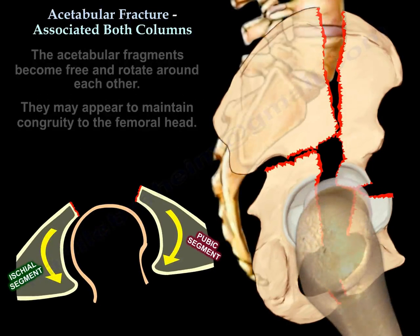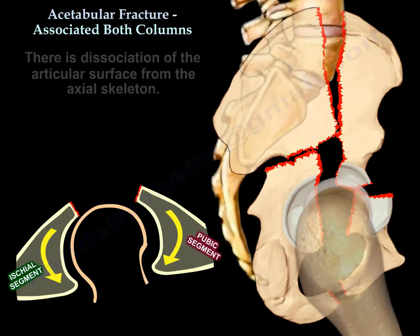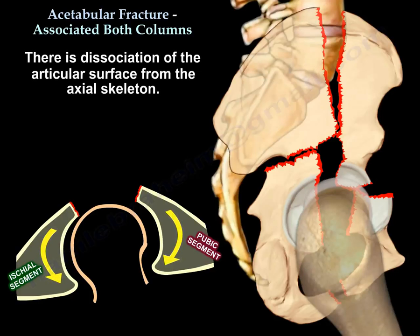The acetabulum fragments become free and rotate around each other, and they may appear to maintain congruity to the femoral head. There is dissociation of the articular surface from the axial skeleton.